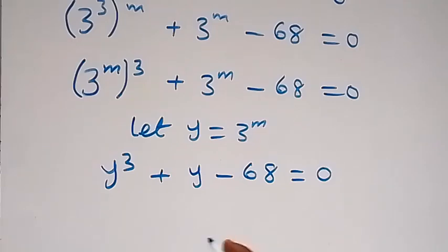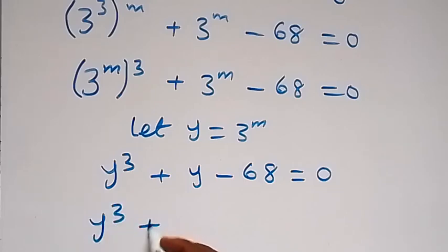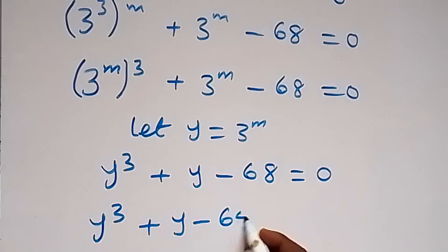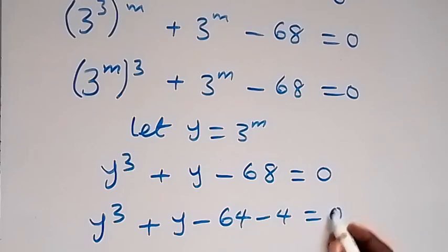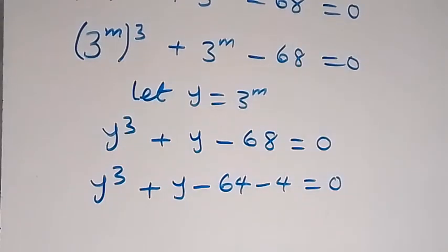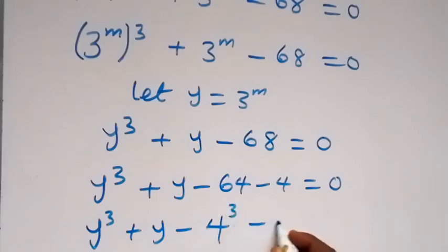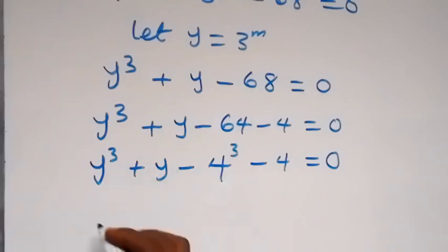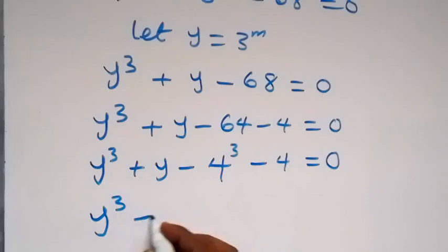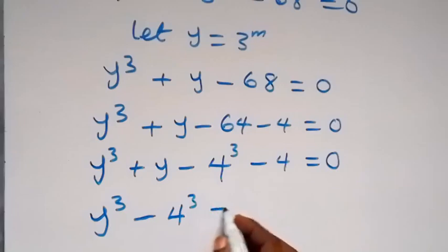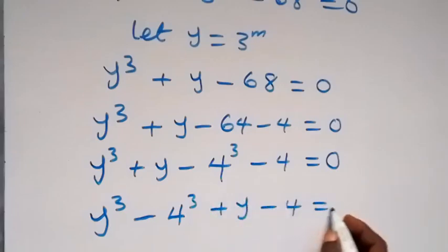From here we can also write minus 68 as minus 64 minus 4. So this becomes y cubed plus y minus 64 minus 4 equals 0, that is y cubed minus 4 raised to power 3 plus y minus 4 equals 0. Then let's group the power of 3 together: y raised to power 3 minus 4 raised to power 3, then plus y minus 4, equals 0.